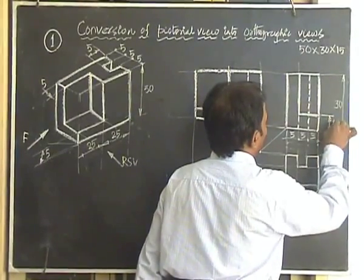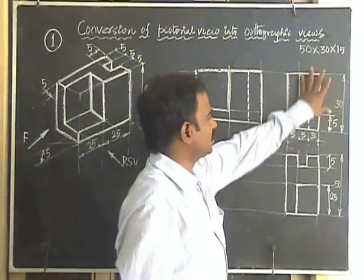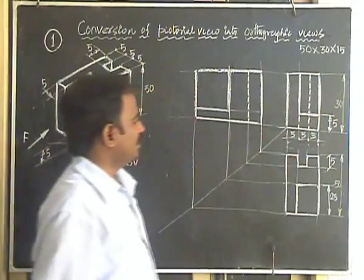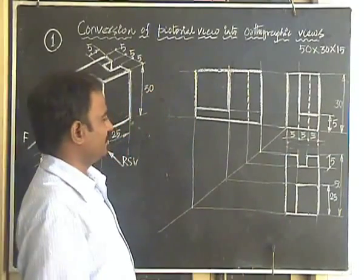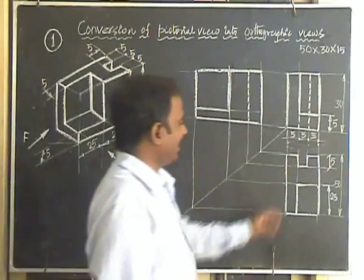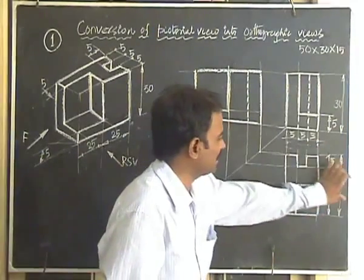Just try to cross check all the details. Just cross check the height: 5 plus 25, 30. Then regarding breadth: 5, 5, 5, 15. Length: 7.5, 7.5 is 15.